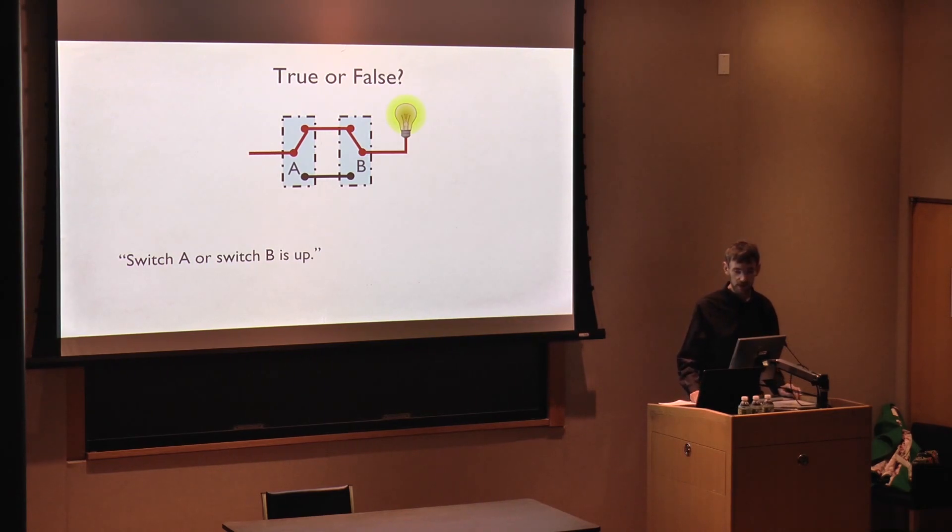What about this one? Switch A or switch B is up. If you agree with this, please raise your hand. Okay, now maybe you're thinking this isn't the best way to describe the picture, right? After all, we use the word 'or' when we're not sure about something. Now, we can all see this picture. So maybe it's helpful to imagine somebody who doesn't see very well and they can only see one of the switches.